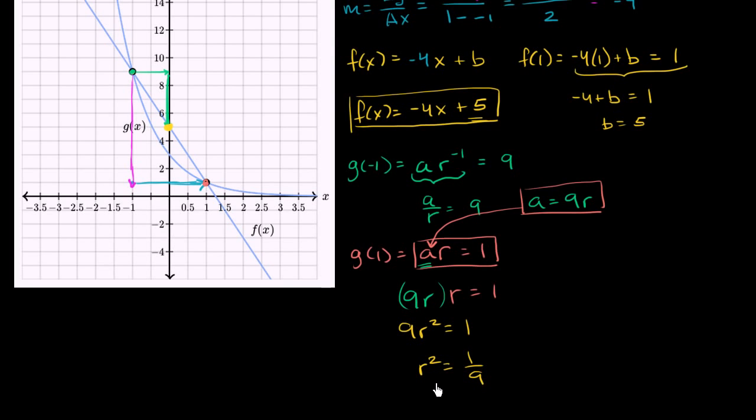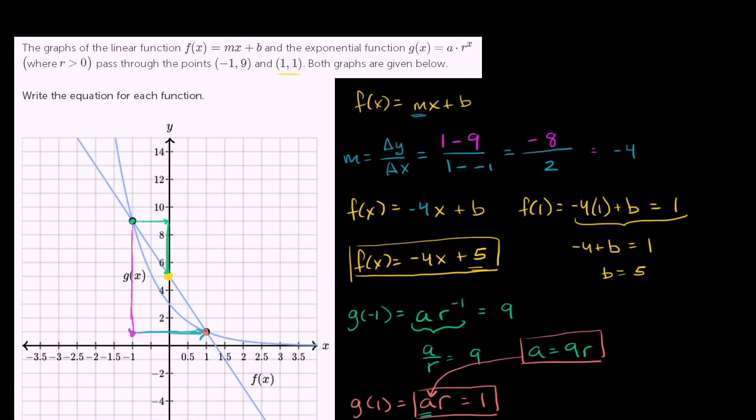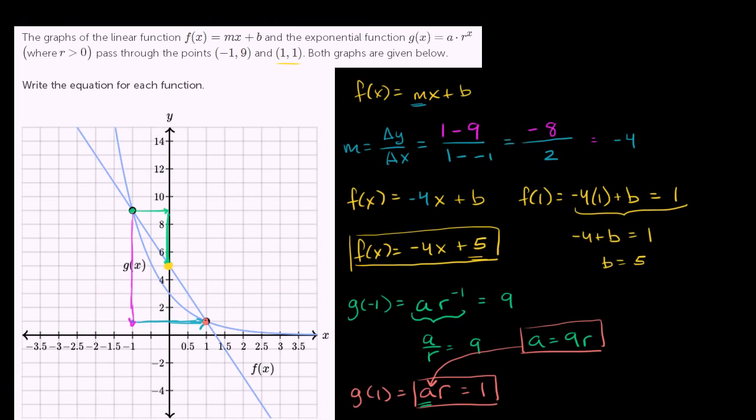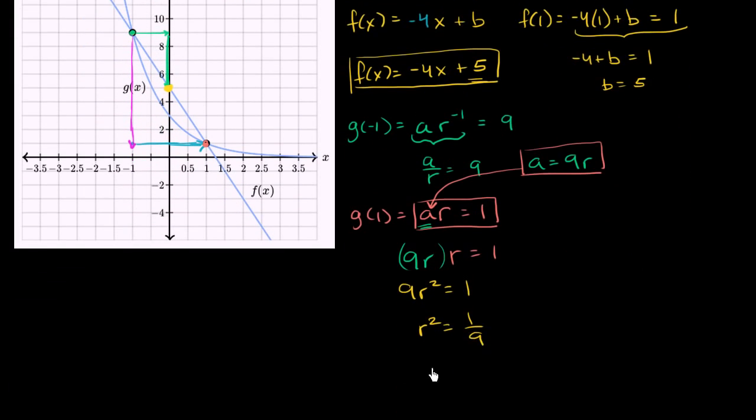And now to figure out r, you might want to take the positive and negative square root of both sides, but they tell us that r > 0. So we can just take the principal root of both sides, and we get r = 1/3. Then we could substitute this back in. We know that a = 9r. So 9 times 1/3, a = 3.